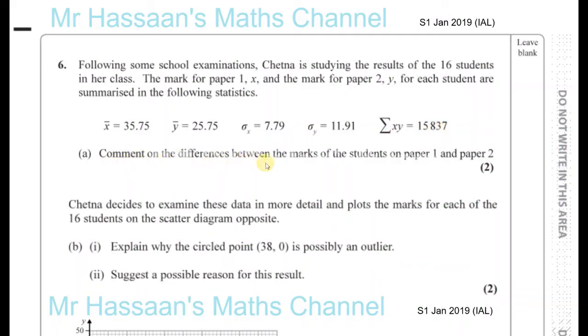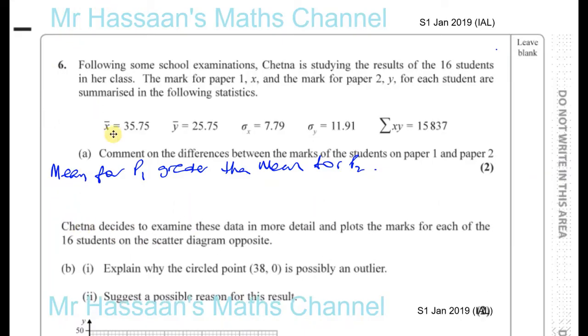Comment on the differences between the marks of the students on paper 1 and paper 2. So for this question, it's only two marks, so you've got to mention something about the mean. You can say that the mean for paper 1 is greater than the mean for paper 2.